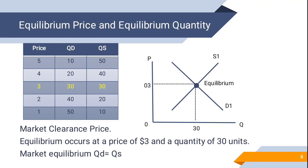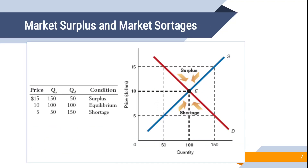If we increase the price it causes disequilibrium, and if we decrease the price it also causes disequilibrium. The ideal place is equilibrium — whoever wants to buy should buy, whoever wants to sell should sell, and all units are cleared. This is why it is known as the market clearance price. Now let's see how we handle surplus and shortage.